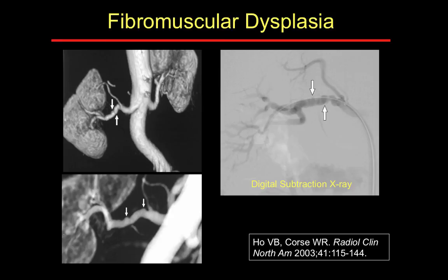If timing is done well, you can achieve fairly high-quality gadolinium-enhanced MRAs. Here is a patient with fibromuscular dysplasia: on the right is digital subtraction angiography showing the typical beaded appearance of the right renal artery, and on the left the MRA shows a very similar beaded appearance in the same individual — demonstrating that high-quality MRA comparable to conventional angiography is achievable.